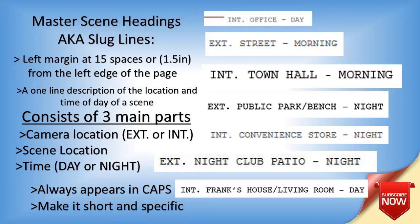So where do you place them? Left margin at 15 spaces or 1.5 inches from the left edge of the page. It's a one-line description of the location and the time of day of a scene. There are three parts to them: camera location, which is exterior or interior; scene location; and time — basically day or night. Always appears in caps — every word in the slug line, all in caps.